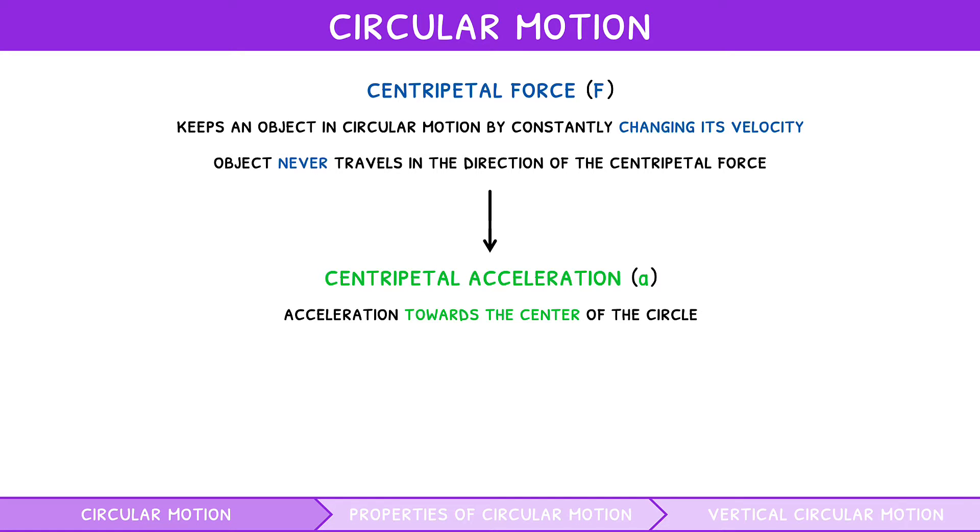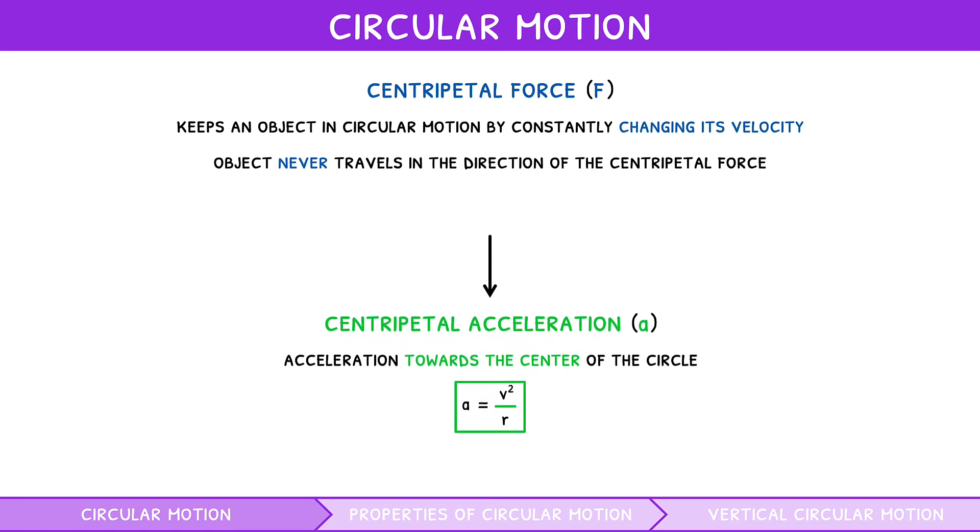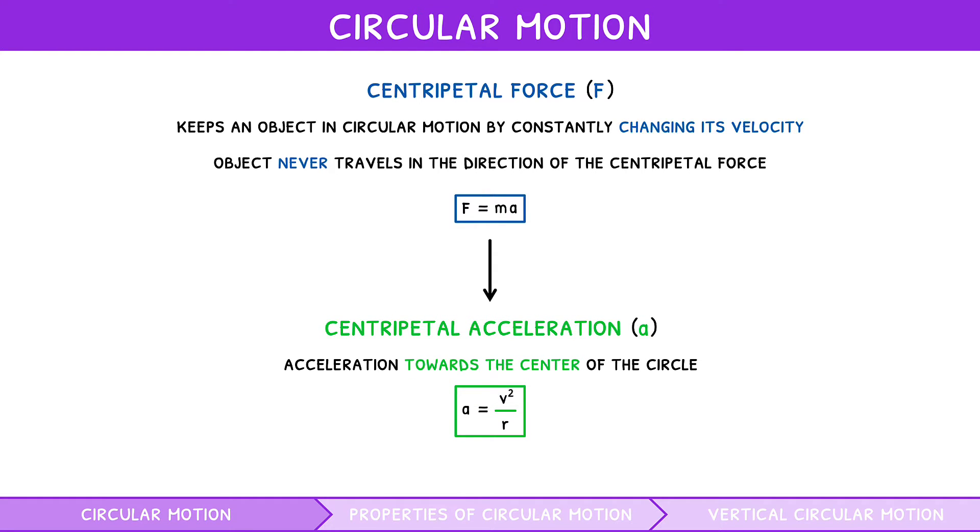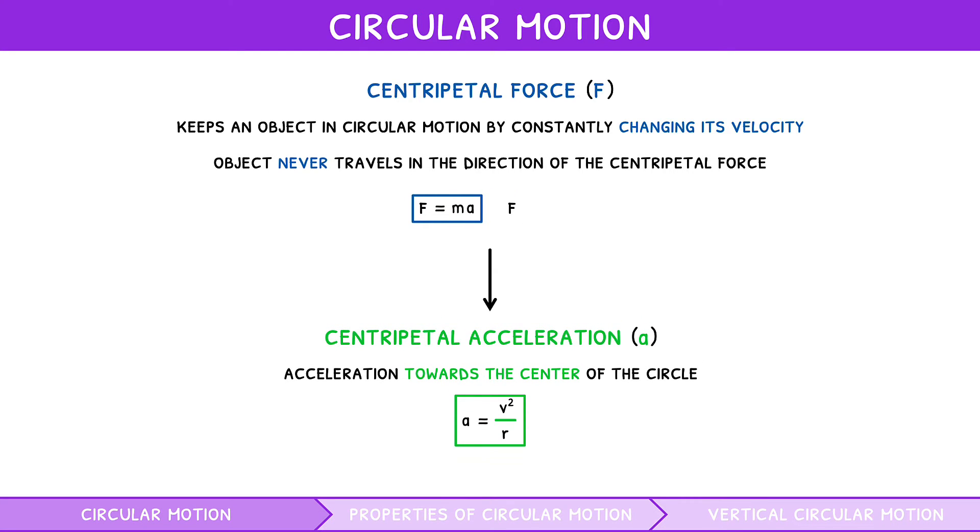For centripetal acceleration, centripetal acceleration equals velocity squared divided by radius. However, for centripetal force, the normal formula still applies. Force equals mass times acceleration. Although, we can substitute centripetal acceleration in this context, changing the formula to force equals mass times velocity squared divided by radius.